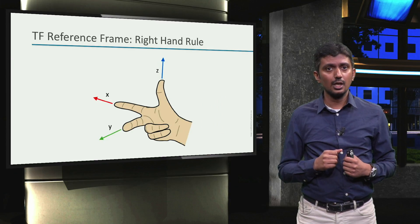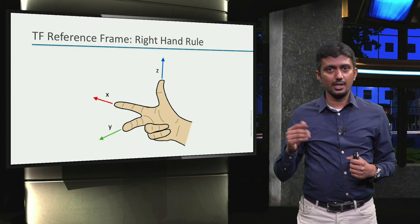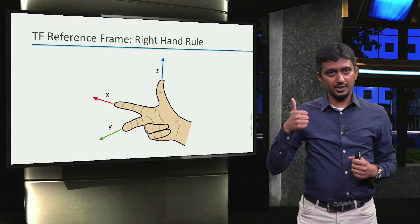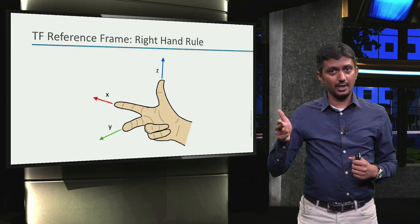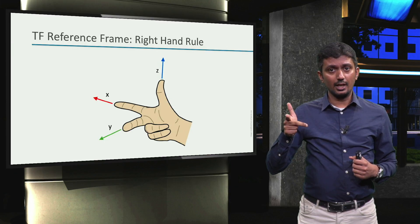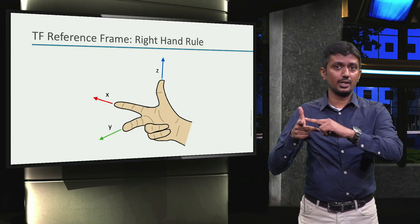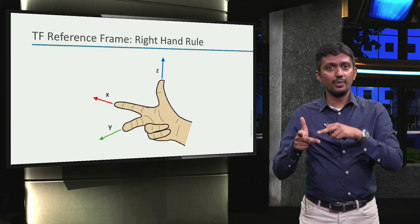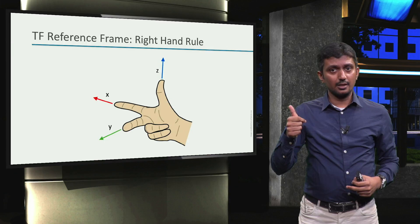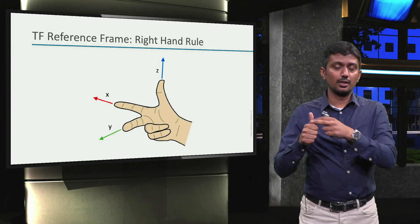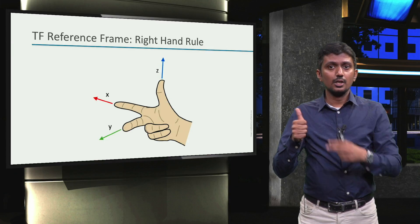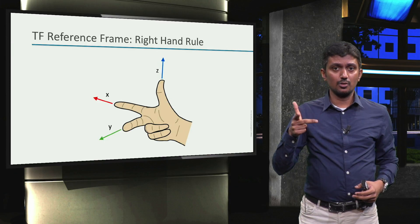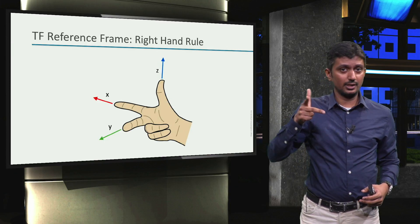This is nice, but what convention does ROS use to define these frames? The convention used in ROS to define these frames is the right-hand rule. That is, if we stretch the thumb, the index finger, and the middle fingers of our right hand like this, then the index finger refers to the x-direction, the middle finger refers to the y-direction, and when we curl the index and middle fingers into a fist, the thumb points in the z-direction. For example, right-hand rule is also valid in this configuration, or like this.